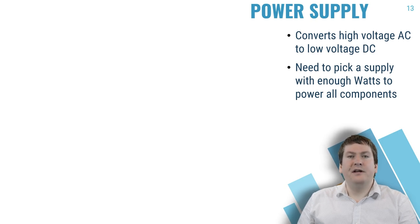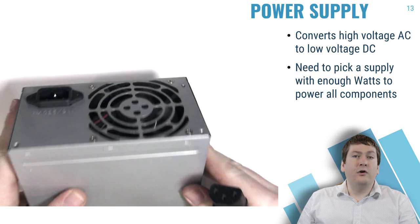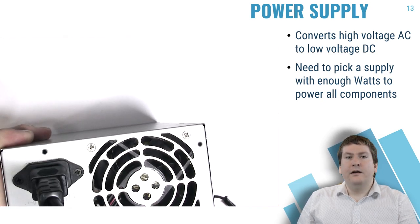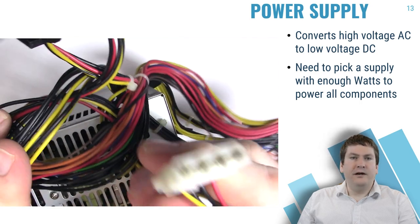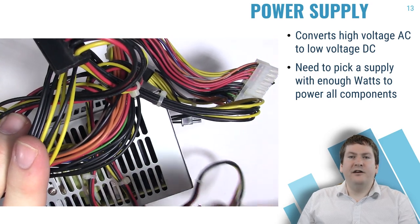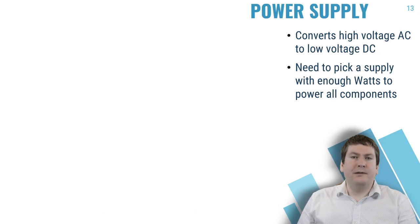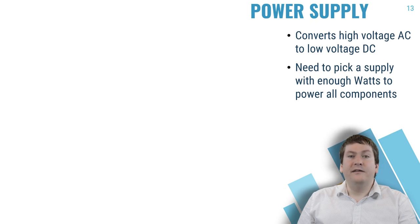Let's explore the internal components starting with the power supply. It has a simple job: converting high-voltage AC current from your power outlet into low-voltage DC current that your computer can use. The power cord plugs in on the outside and goes to your outlet; on the inside, wires take power from the supply to different components. None of your data is sent through these wires — just power. An important consideration when picking a power supply is ensuring it has enough wattage to power all your components. Modern CPUs and GPUs can take a significant amount of power when operating at full capacity, such as when gaming or rendering video.